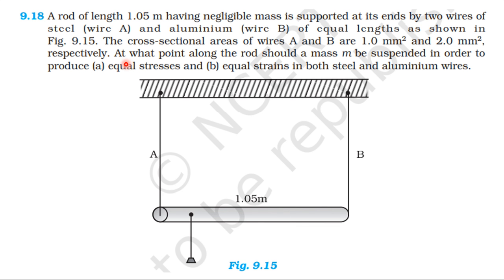From NCERT textbook, from the topic Mechanical Properties of Solids, we learn exercise 9.18. A rod of length 1.05 meter having negligible mass is supported at its ends by two wires — steel wire A and aluminium wire B — of equal lengths as shown in figure 9.15. The cross-sectional areas of wires A and B are 1 mm² and 2 mm² respectively. At what point along the rod should a mass M be suspended in order to produce: first, equal stress; second, equal strain in both steel and aluminium wires?